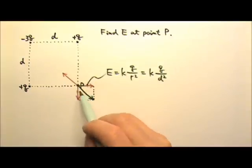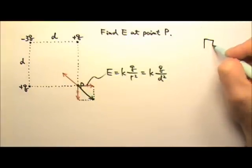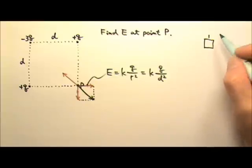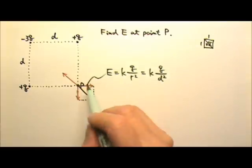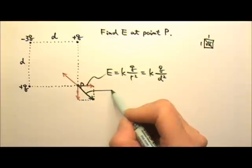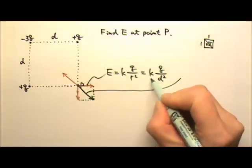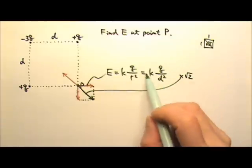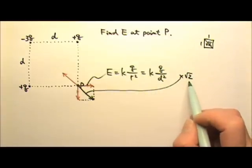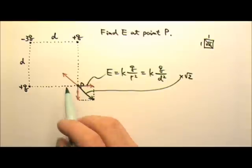The magnitude of the sum is the diagonal of this square. For a square, we know that if the side is 1, then the diagonal would be square root of 2. So to find the diagonal, multiply the side by square root of 2 to get the diagonal.